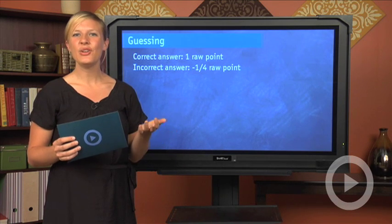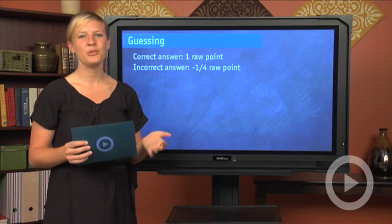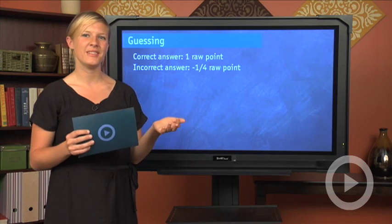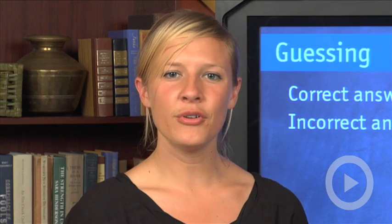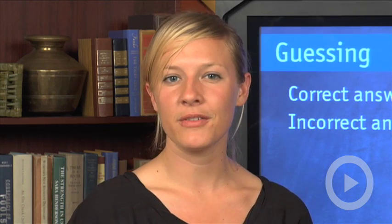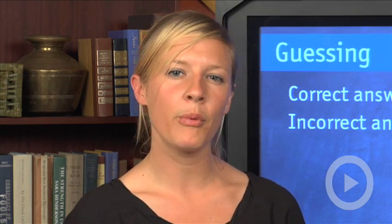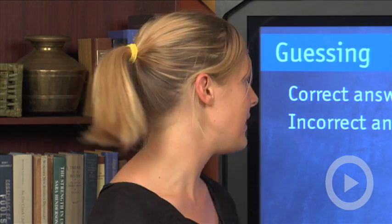On the PSAT, you can earn anywhere between 20 and 80 per section, which means that overall, you're going to get between 60 and 240. But that's not the point. The point is that when you're able to eliminate a certain number of answer choices, it actually works in your favor, which means that you get more raw points than negative raw points. Let's take a look at what I mean.